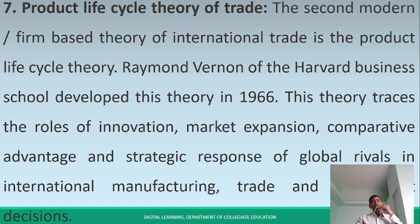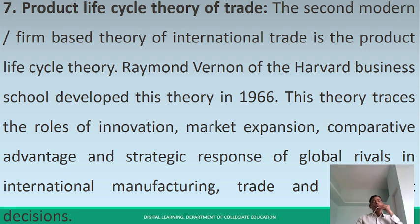The seventh theory is Product Life Cycle Theory of Trade. Product Life Cycle Theory is the second modern or firm-based theory of international trade. It was developed by Raymond Vernon of the Harvard Business School in 1966. This theory traces the roles of innovation, market expansion, comparative advantage, and strategic response of global rivals in international manufacturing, trade, and investment issues.